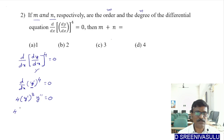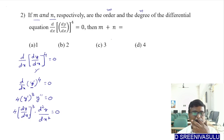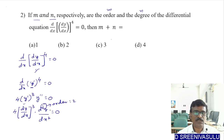So we have 4·(dy/dx)³·(d²y/dx²) = 0. The highest derivative present is d²y/dx², so the order is 2. The power of d²y/dx² is 1, so the degree is 1.